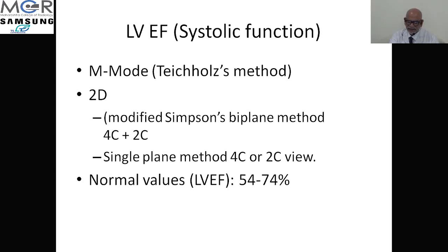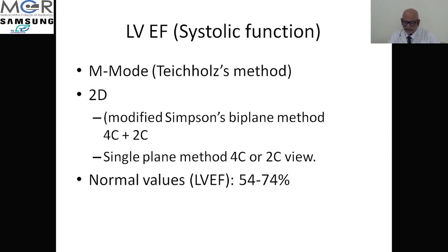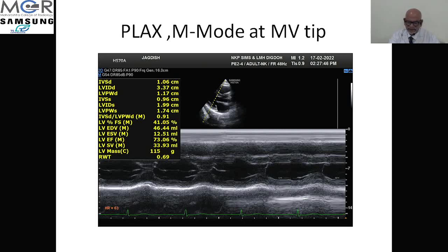2D is called as modified Simpson's biplane or single plane — both can be used. Biplane uses the 4-chamber and 2-chamber views; in single plane either you can use the 2-chamber view or the 4-chamber view. Normal ejection fraction values are 54 to 74%. Less than 54% may be impaired ejection fraction; more than 74% may be a hyperdynamic state, found in patients with thyrotoxicosis or anemia where ejection fraction may be more than normal.